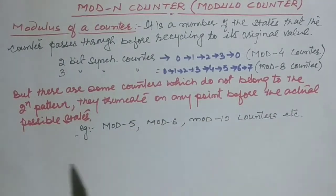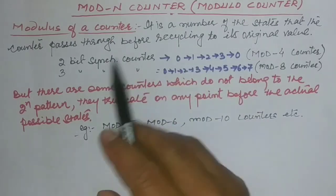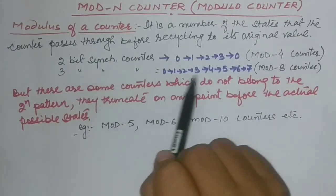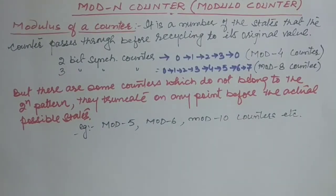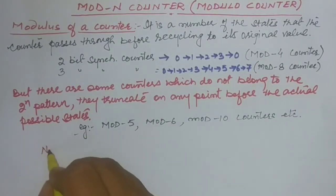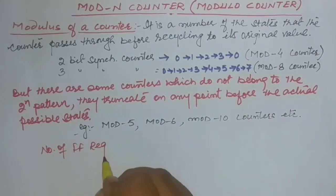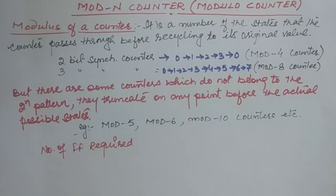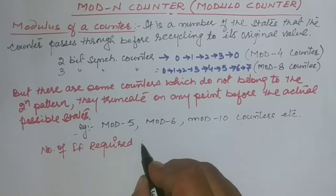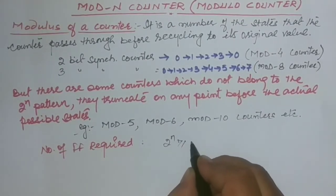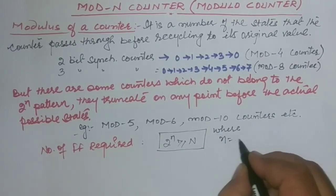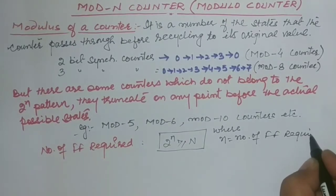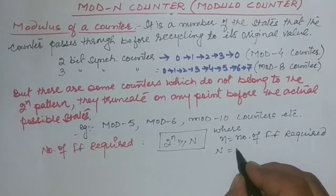Since 5 is never equal to 2 raised to any power, and 6 is also not equal to 2 raised to any power, these are non-standard moduli. A 2-bit synchronous counter is 2 raised to power 2 = 4, and a 3-bit is 2 raised to power 3 = mod-8. For mod-5, mod-6, and mod-10, we calculate the number of flip-flops required using the formula: 2 raised to power n should be greater than or equal to N, where n is the number of flip-flops required and N is the integer value written after mod.